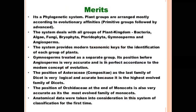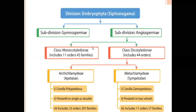This is the overall flowchart of Engler and Prandtl classification. Embryophyta, also called Siphonogamma, is the 13th division. Siphonogamma means pollen tube is formed during fertilization. It is divided into two subdivisions: Gymnospermae and Angiospermae. Angiospermae are advanced plants and Gymnospermae are primitive plants, so Gymnospermae is placed before Angiospermae. The subdivision of Angiospermae is classified into two classes: Monocotyledonae and Dicotyledonae.